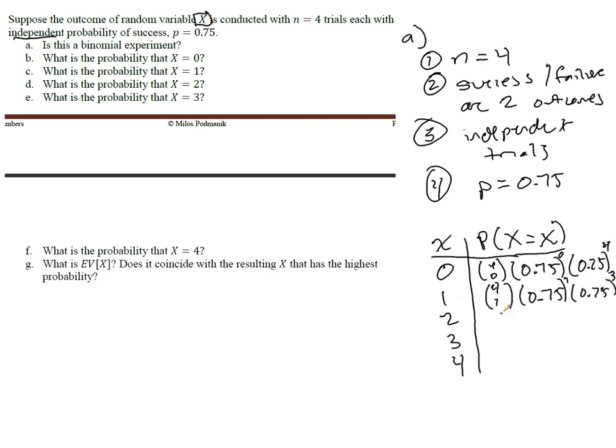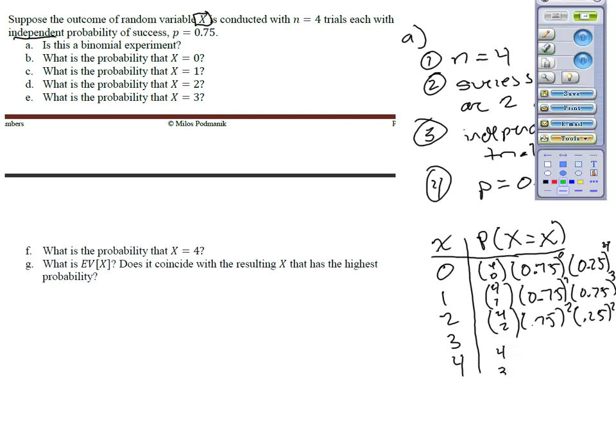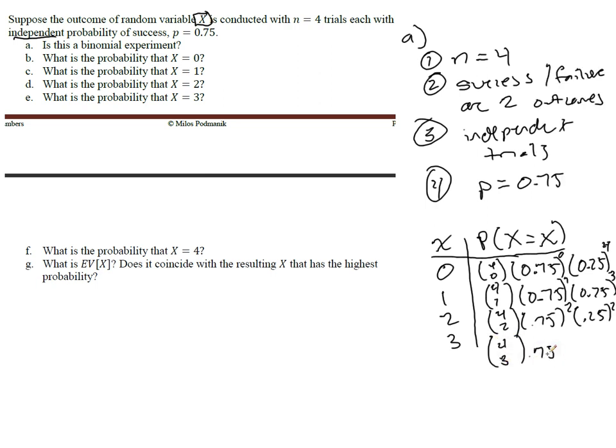So, we have 1 success, 3 failures. And then, similar pattern, 4 choose 2, 0.75 squared, 0.25 squared. And finally, for 2 more to go, we'll have 4 combination 3, 0.75 to the 3 successes, and 1 failure.